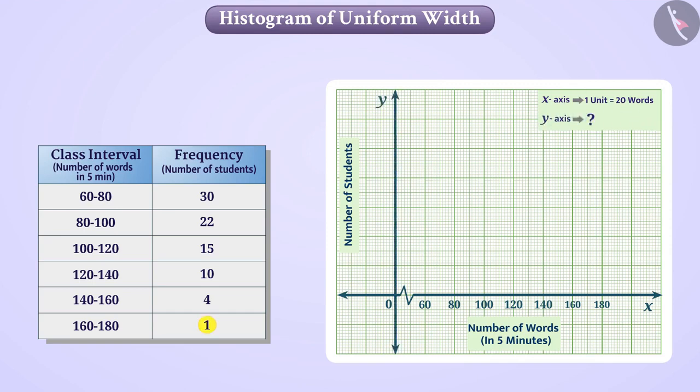Here a suitable scale would be such that we can properly represent the smallest number 1 and the largest number 30. We can take the scale for the y-axis by 1 unit is equal to 5 students. Since the numbers 30, 15, and 10 are multiples of 5, it would be easy to represent them.